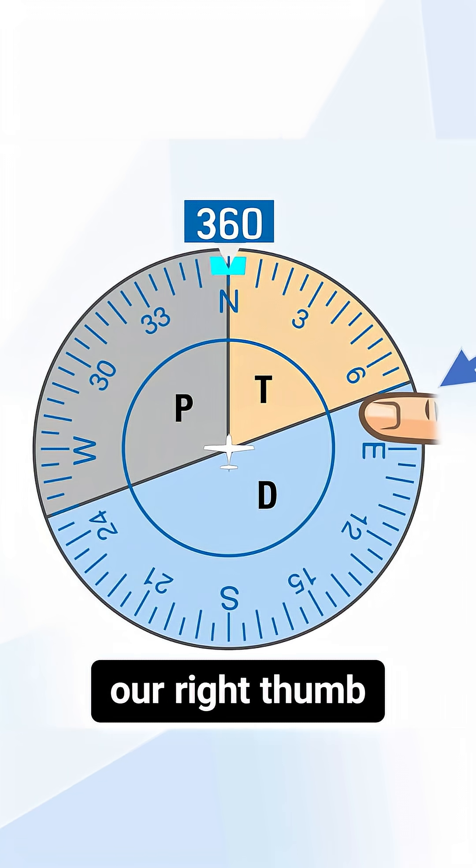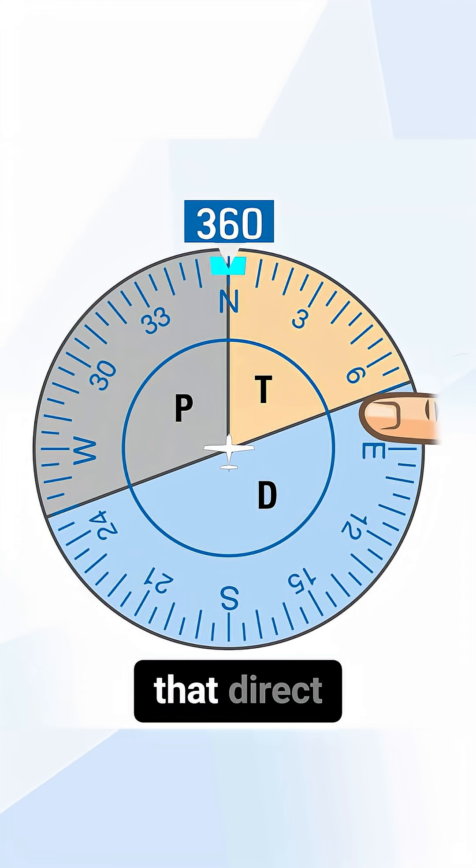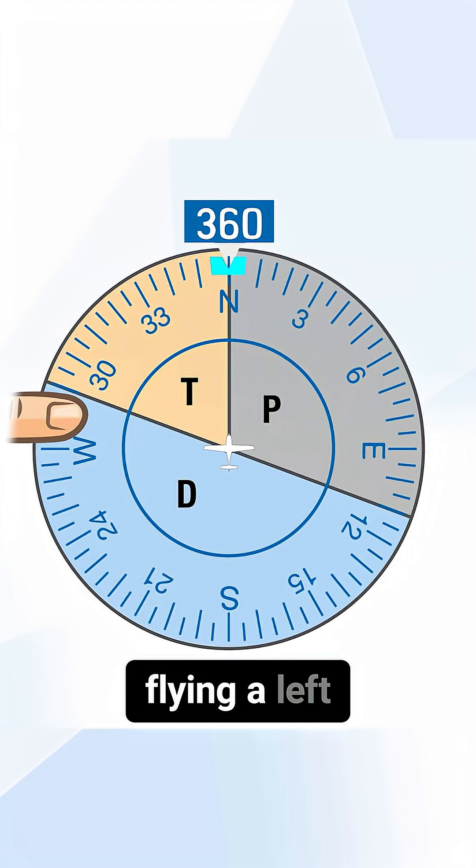We're going to use our right thumb to visualize that direct entry border. If we're flying a left hand pattern, then we simply use our left thumb.